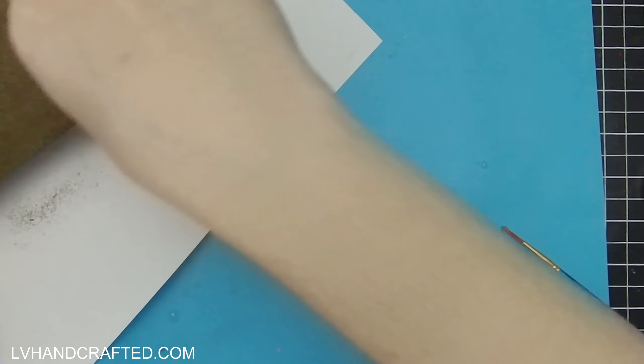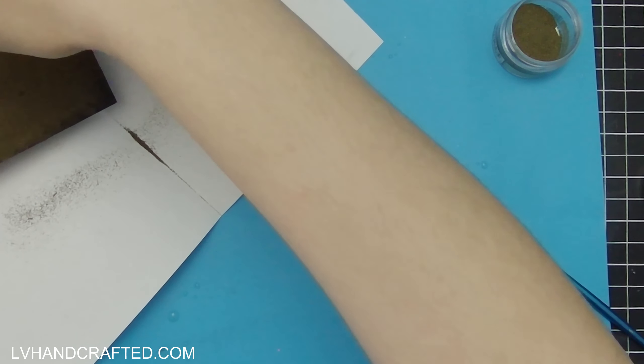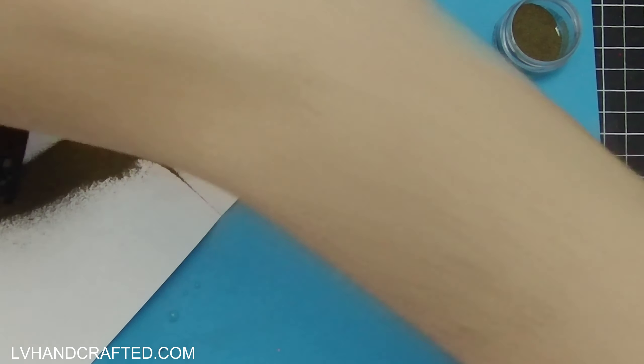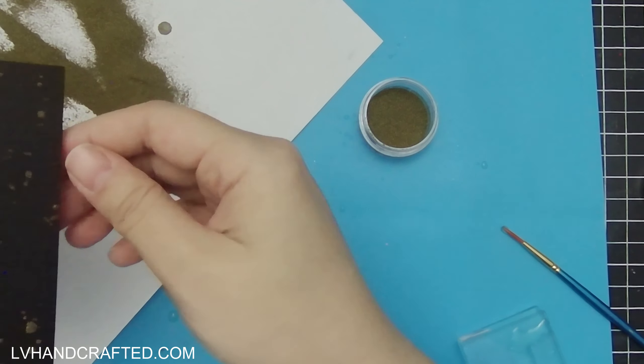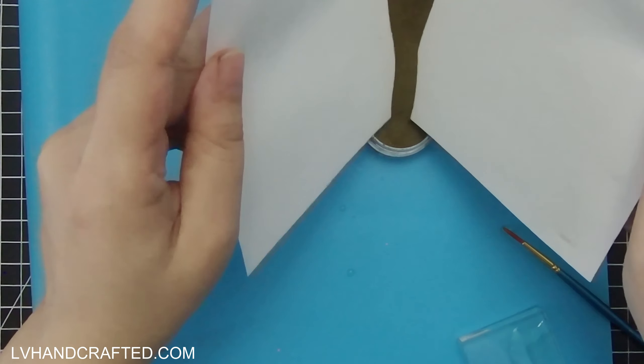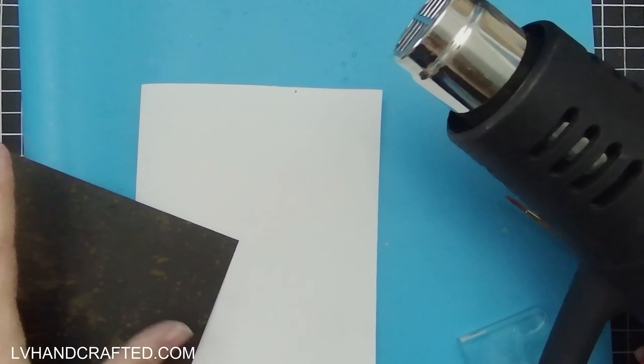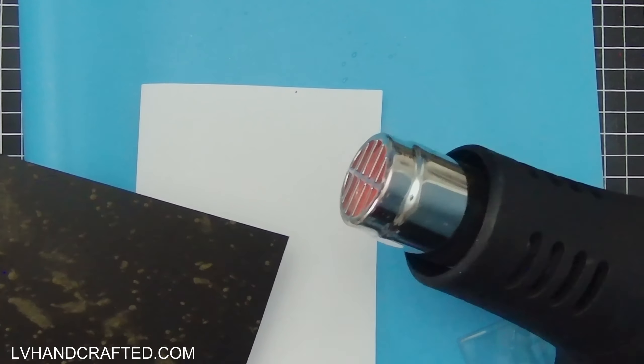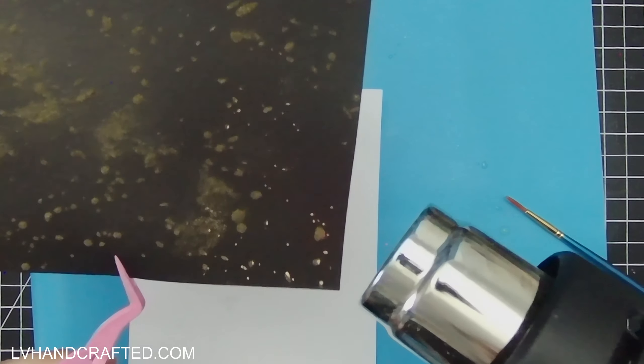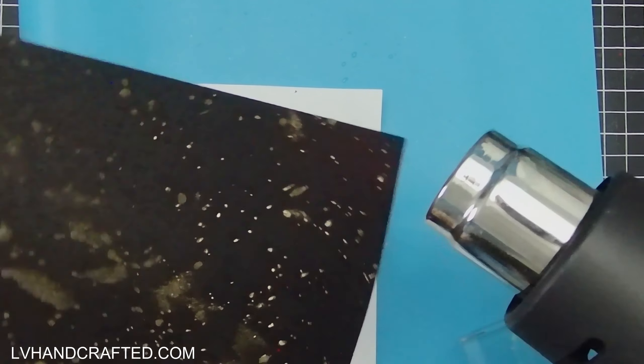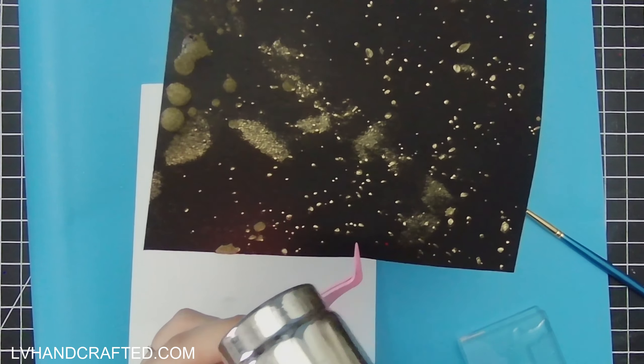And because gum arabic is a binding agent, it will help to keep the embossing powder attached onto the card. I mean, once that water in the gum arabic solution melts off or is heated off, the powder itself has a binding agent and will adhere to your card. But the gum arabic I find just keeps it onto your card during the heating process.